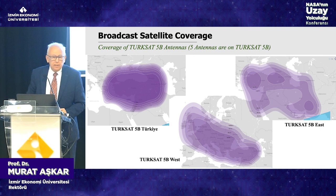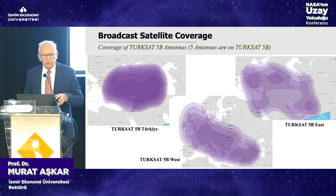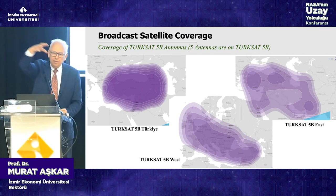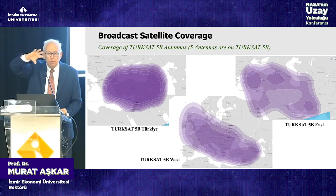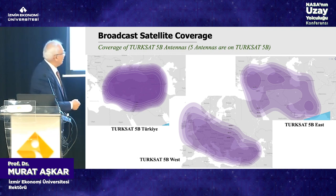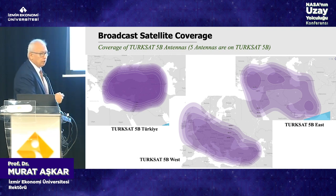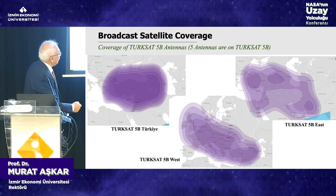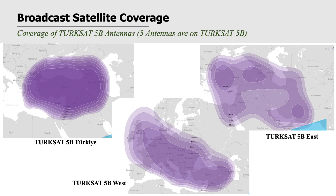Another important aspect is coverage. For broadcast satellites, for example, we have TÜRKSAT satellites with different antennas. We send the television signal up and it is resent to the Earth in different places based on the antenna structure. One antenna covers Turkey — the dark coloring means you can use a small antenna, while lighter areas require a larger antenna to receive the signal.